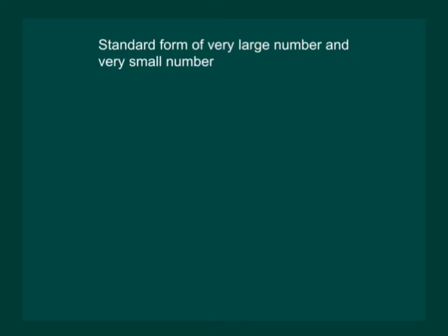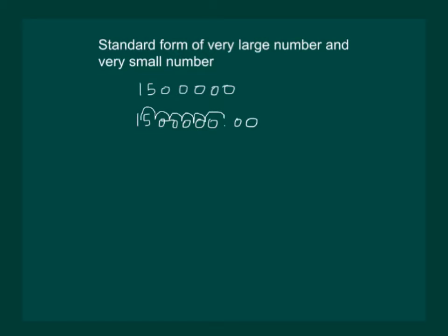Let us consider some number, say 15 and 5 zeros. We know that this can also be written as 15.00. Next, we will move this decimal point to the left so that there is only one digit on the left side of the decimal point. That means we will have to move this decimal point three places such that only one number is on the left-hand side of the decimal point. And we can rewrite this number as 1.5 multiplied by 10 raised to the power 6, since we have moved 6 places to make it 1.5.